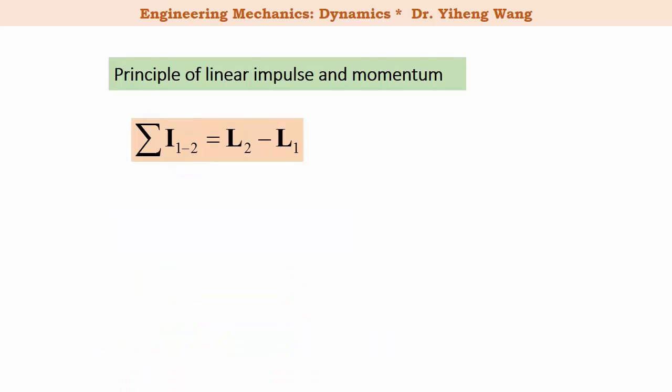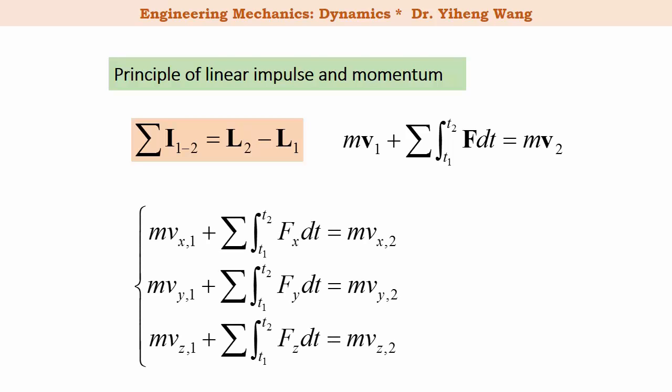The principle of linear impulse and momentum is normally written to show a direct relation of how external forces are changing the velocity of the particle. Because this is a vector equation, it can be rewritten into three scalar equations along the x, y, and z directions respectively.